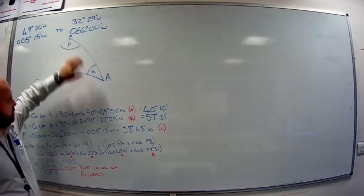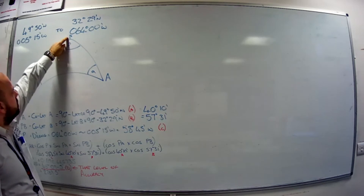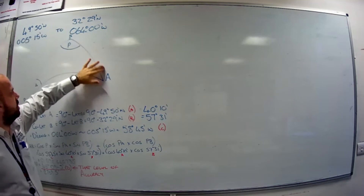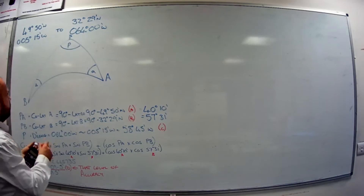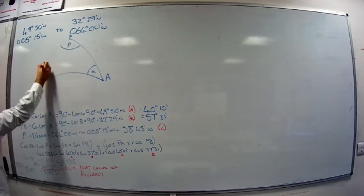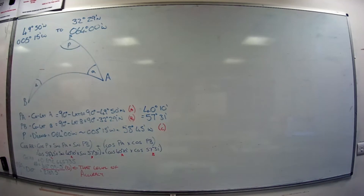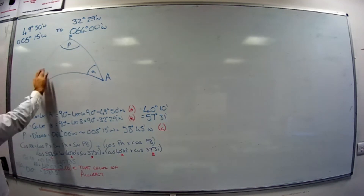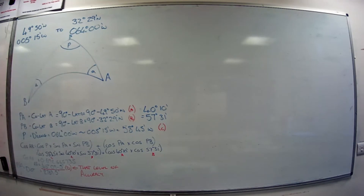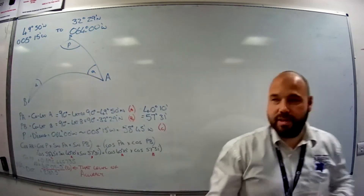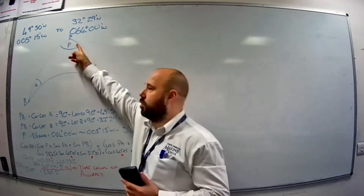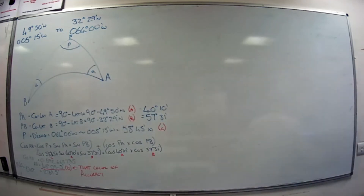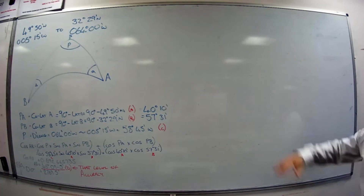The only difference would be if we were crossing the equator — we'd still work from the same pole. If PA was 49°50'N we'd do 90° minus that as before. But if B was 32°29'S, we'd have to go 90° down to the equator and then another 32°29' further, so it would be 90° plus 32°29'. So: 90° minus for the northern hemisphere position, 90° plus for the southern hemisphere position. Whichever one you subtracted from is your elevated pole, and you must use that pole consistently throughout all calculations.